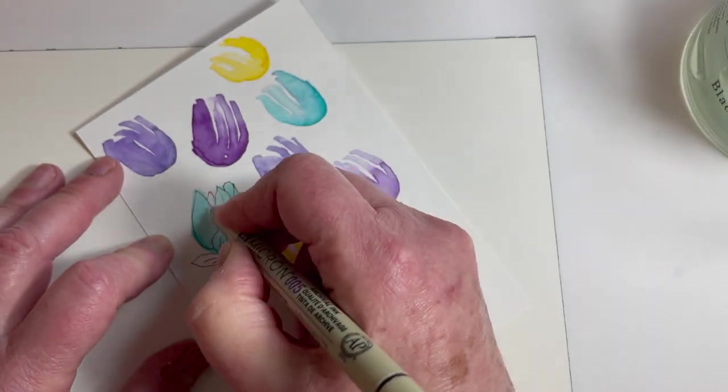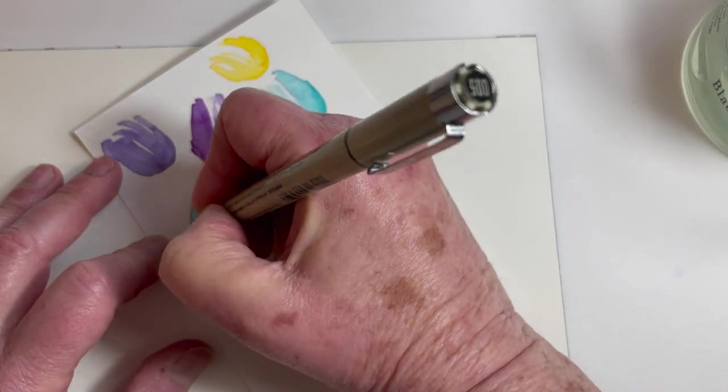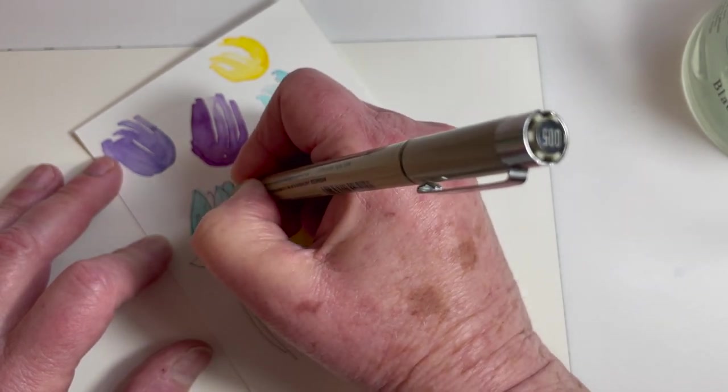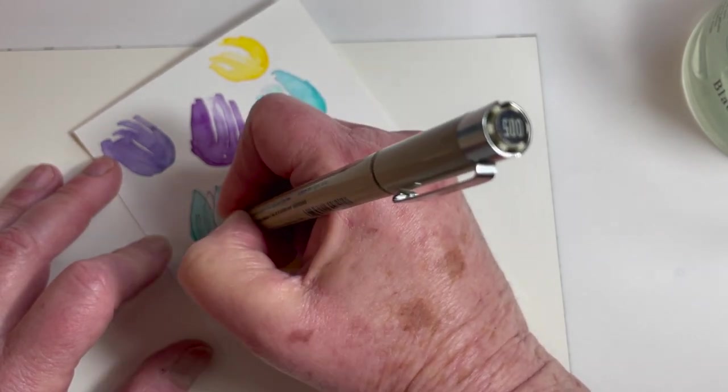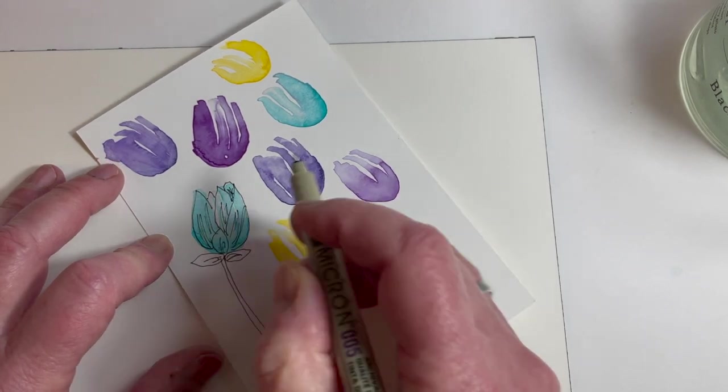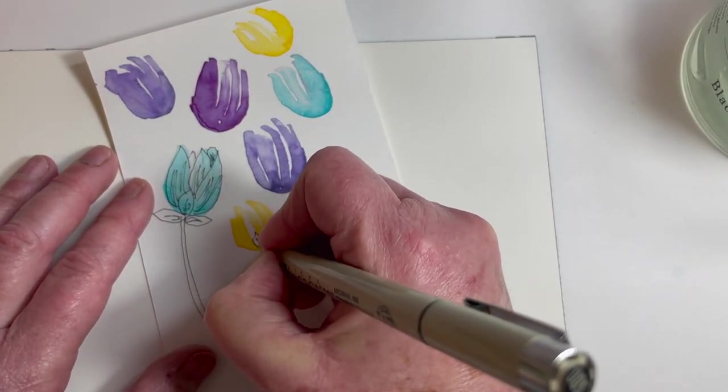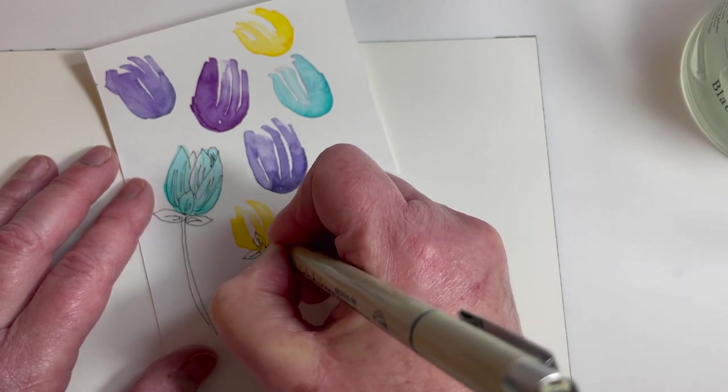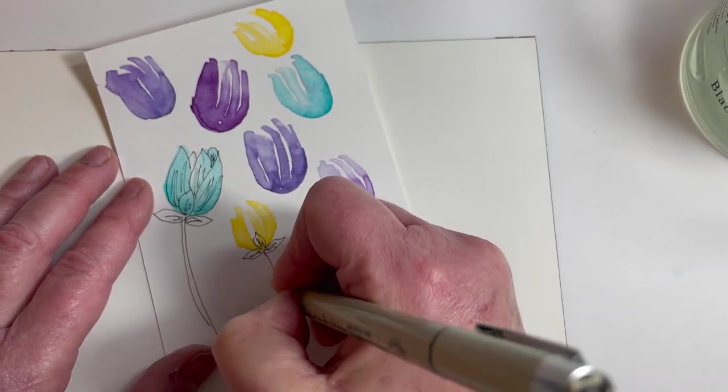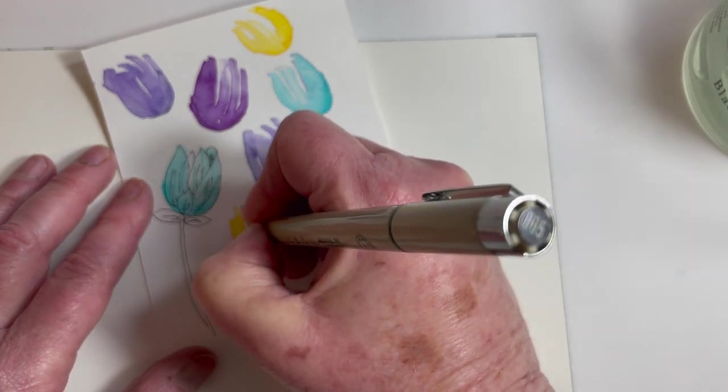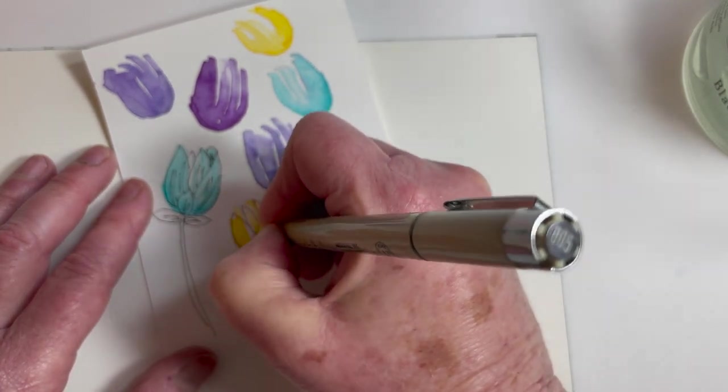And I let the pigment that was on here kind of guide my pen work. So in other words, I came back and put a little petal back there because there was a bit more pigment. But here too you can see the white area, and I just ignore it for these little leaves. And get my petals drawn on nice and loose.